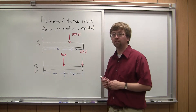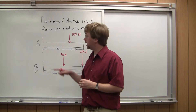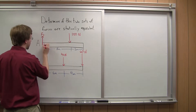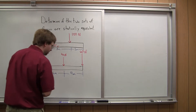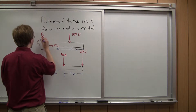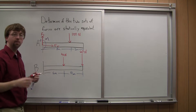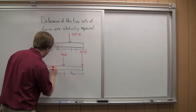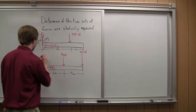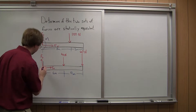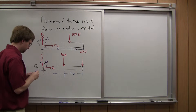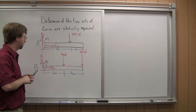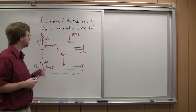We're asked to determine if they're statically equivalent, meaning they cause the same reactions at the base. Our reaction forces are what we need to solve for. With a cantilever beam and a fixed support, it's preventing motion in the Y, so we have Fy; preventing motion in the X, so we have Fx; and it's preventing rotation, so we also have a reaction moment M. Beam B has the same: a reaction force in X, a reaction force in Y, and a reaction moment. To check static equivalence, we solve the equilibrium equations.